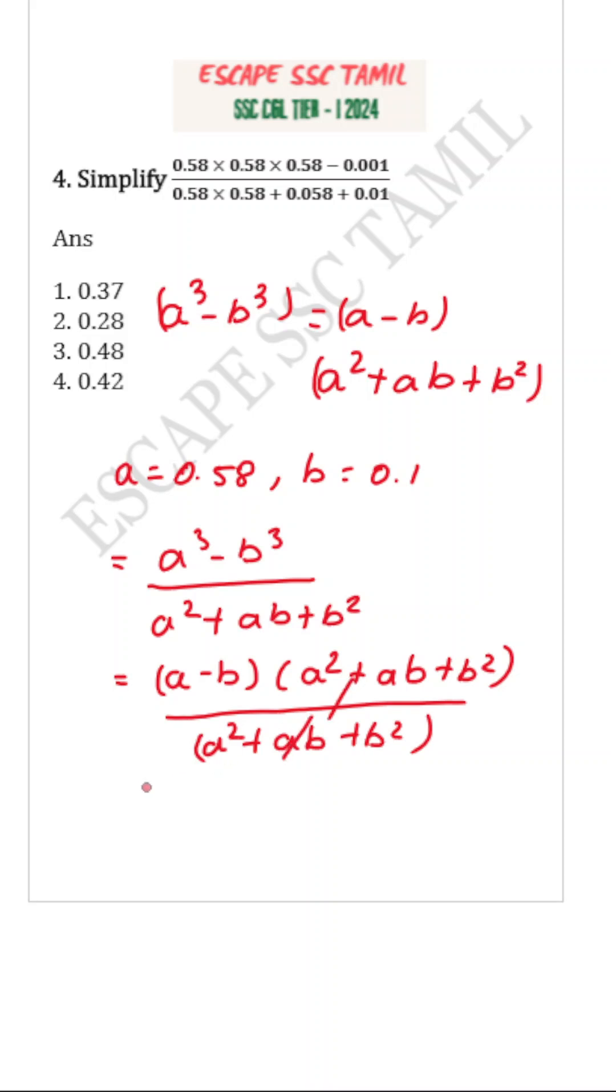On cancelling, we'll get a - b, which is equal to 0.58 - 0.1. So the answer is 0.48, the correct option is option 3.